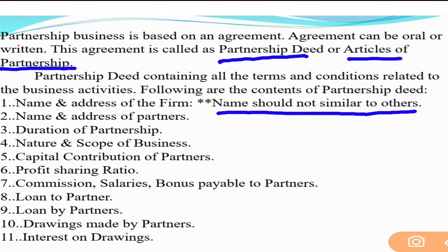Next content: name and address of the partners — who the partners are and their addresses must be written. Duration of the partnership firm — what is the duration of the firm you have formed? If it is a general partnership, there is no fixed duration. But if it is formed for a particular time period or a particular task, that must be written in advance.